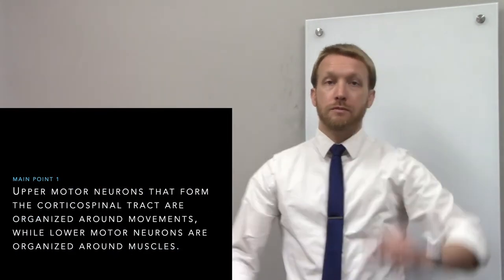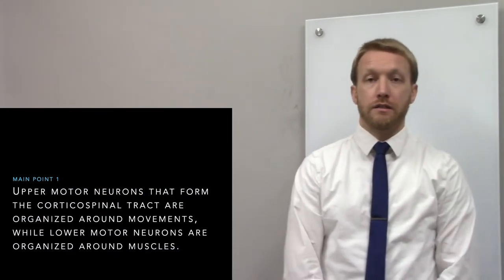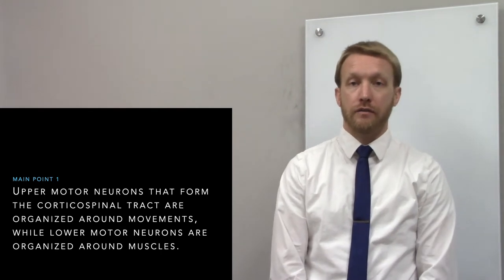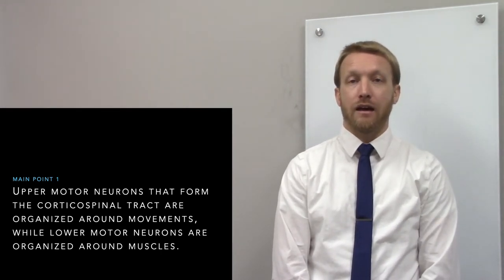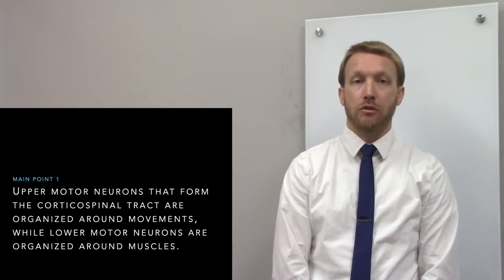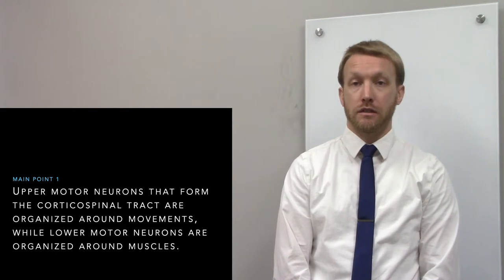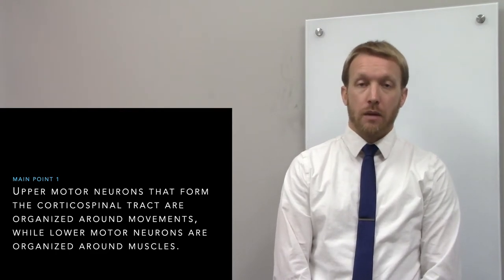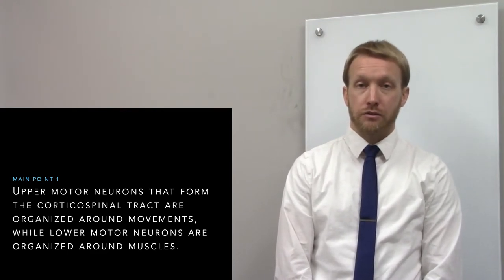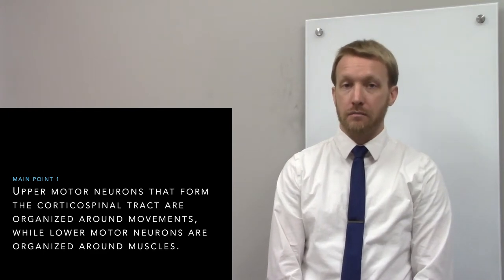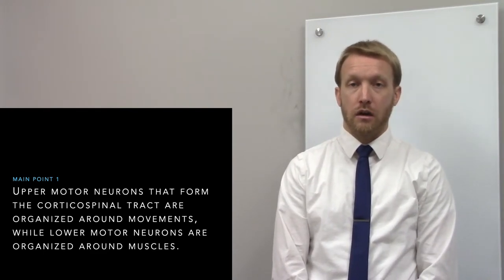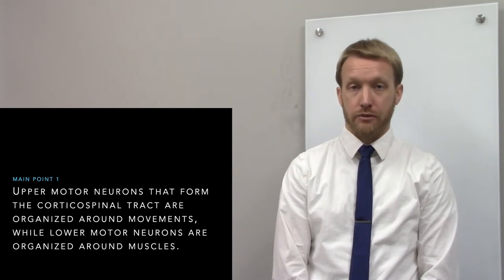The corticospinal tract is the projection from the layer 5 upper motor neurons in the cortex down to the lower motor neurons in the spinal cord. The upper motor neurons you should think of as being organized around movements, not muscles, while the lower motor neurons are mapped to individual muscle fibers.